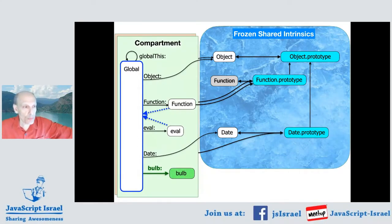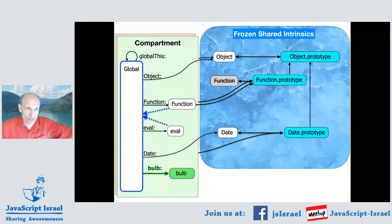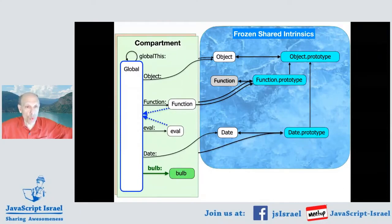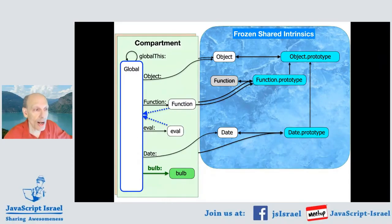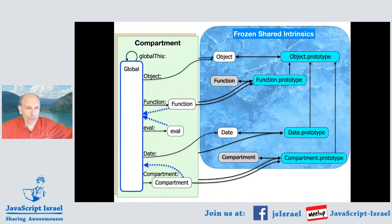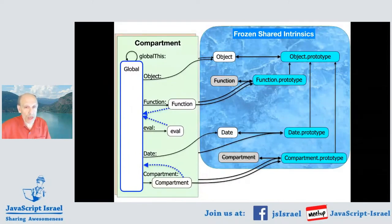The code that creates compartments can also endow the compartment with emulated or attenuated host objects that the start compartment wants to provide to the other compartment, such that the code in the other compartment thinks it's running in a normal JavaScript environment—except that the primordials are frozen—but finds on its global object whatever host objects were endowed by the creator of that compartment. The compartment abstraction itself has an evaluate method, so each compartment has its own compartment constructor.